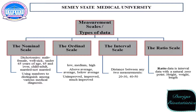The interval scale: all possible values are numbers. It represents the distance between any two measurements – for example between 20 and 30, or between 40 and 50 – or it can be weather or body temperature. The last scale is the ratio scale. Ratio data is interval data with a natural zero point. Examples include height, weight, length, age, number of eggs, and number of children.